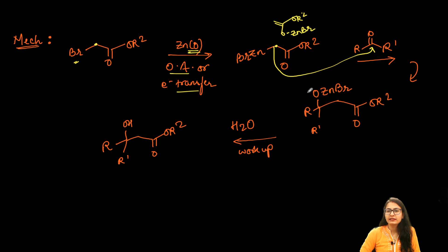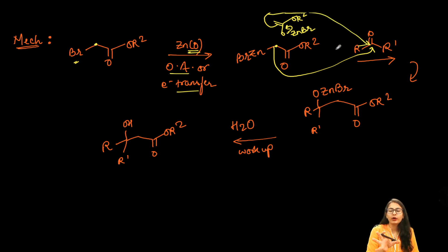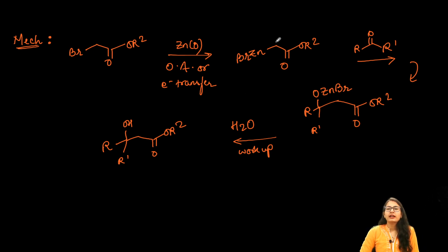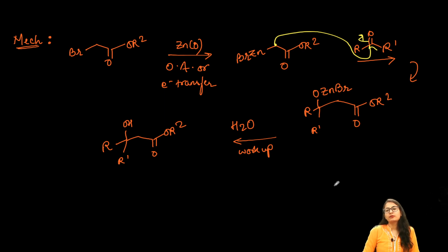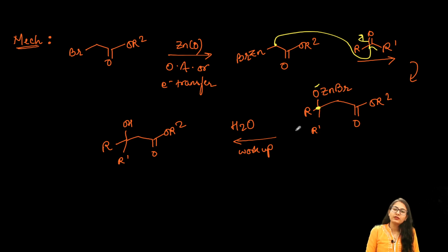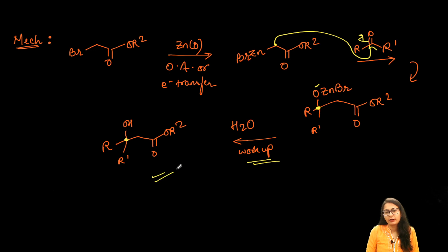In either the zinc-carbon form or the enolate form, the alpha carbon attacks the carbonyl carbon of the ketone. This gives a beta-oxy intermediate stabilized by zinc and bromine (O⁻ · ZnBr). After aqueous workup and hydrolysis, you get the beta-hydroxy ester as the final product.